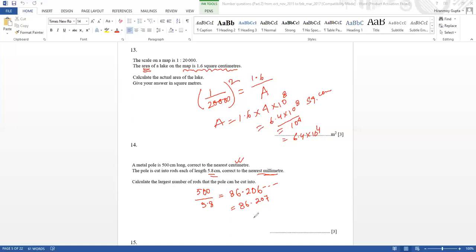Since the answer is 86.207, 87 is not possible because the largest number is 86.207, so it can't go more than that. The largest number of rods that can cut into, so the answer should be in a whole number, but it cannot be 87, so it has to be 86. That's the maximum number you're saying. Yes.